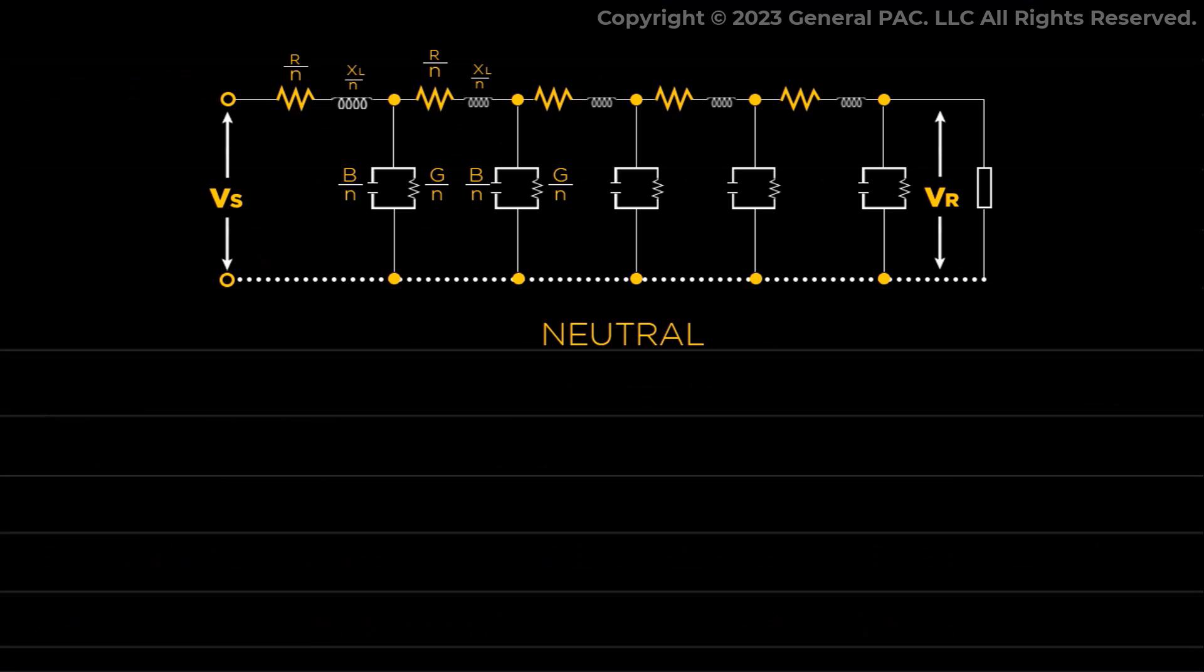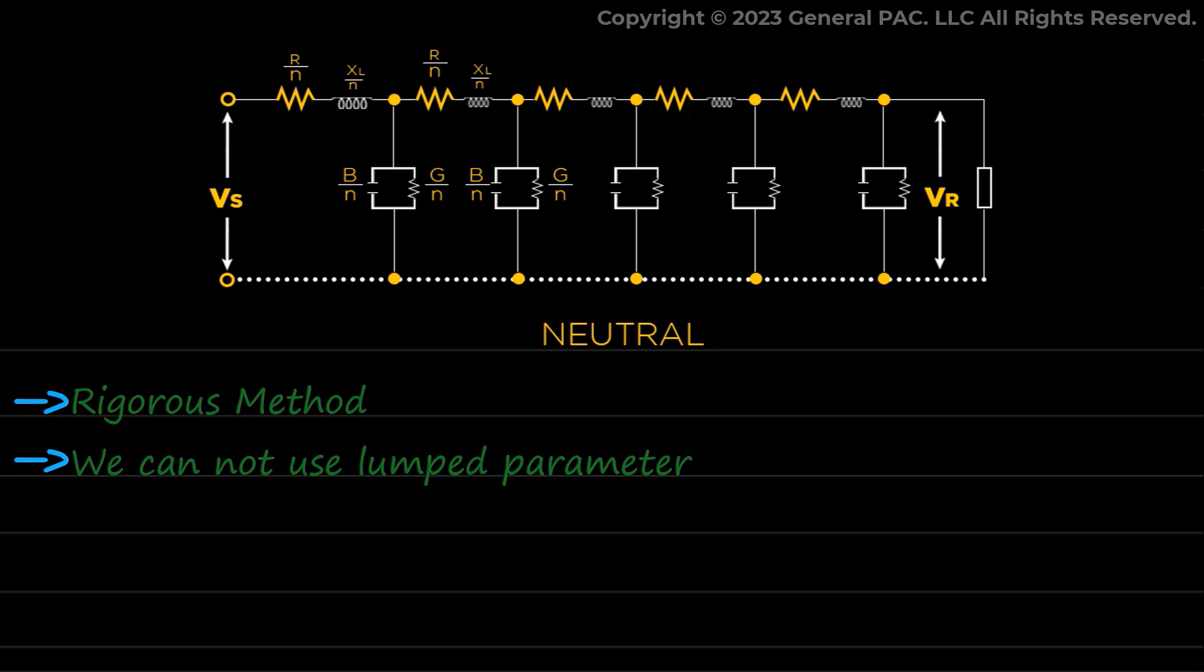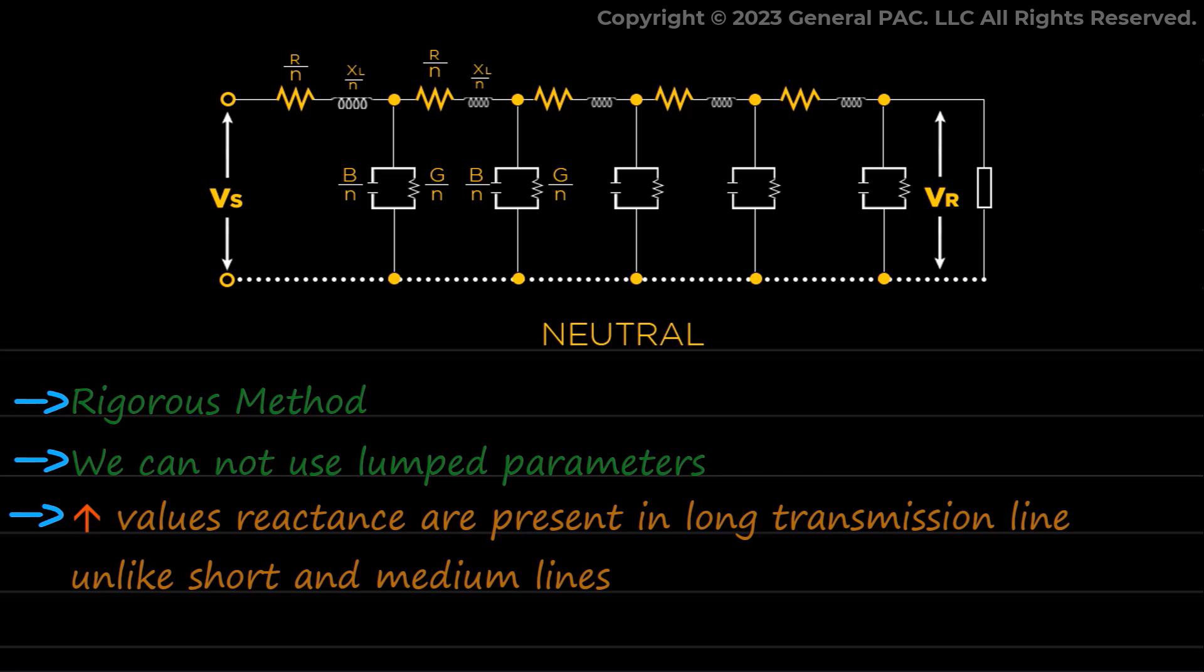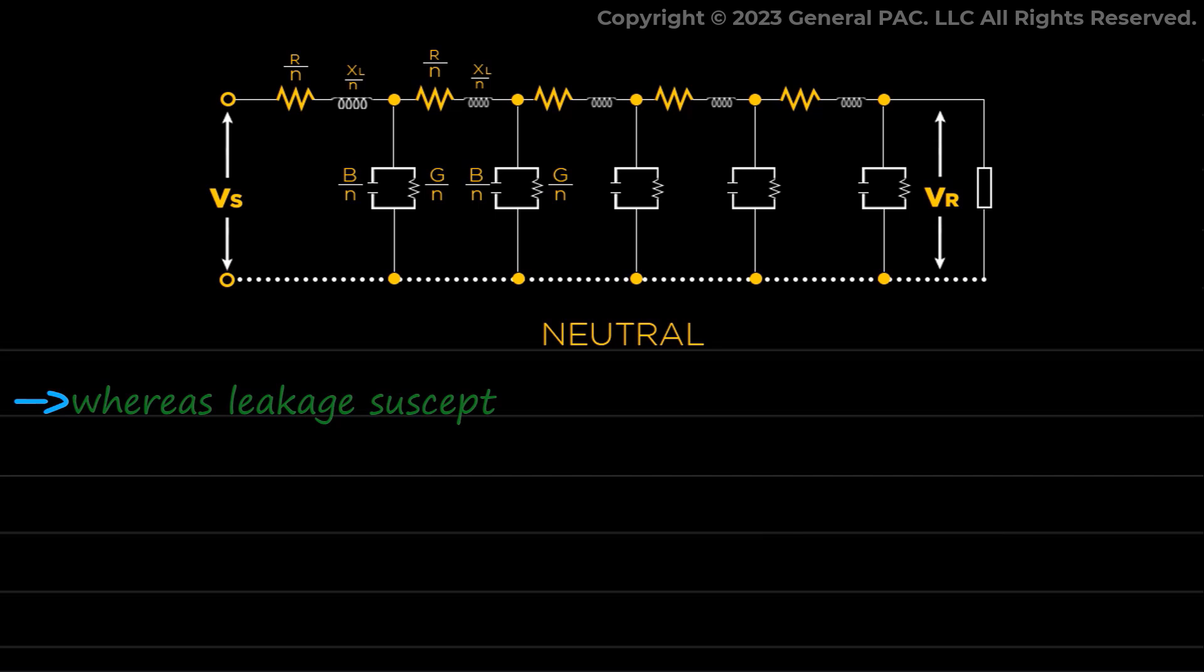For the modeling of long transmission line, the method used is known as rigorous method. We cannot use lumped parameters in the case of long transmission line since serious errors can occur. Hence, we use distributed parameters for long transmission line modeling because it is not practical to lump such high-value reactance that are present in long transmission line unlike short and medium lines. The line constants are distributed evenly over the whole transmission line. The inductance and resistance form the series elements whereas leakage susceptance and leakage conductance are shunt elements.